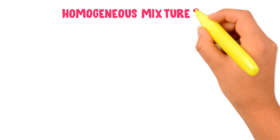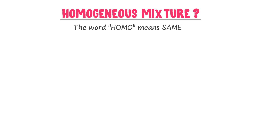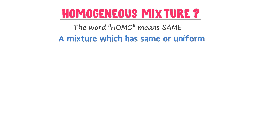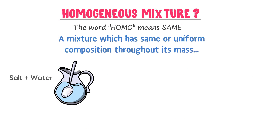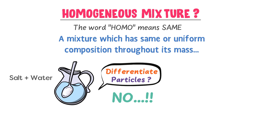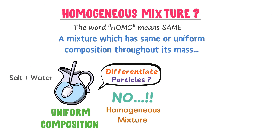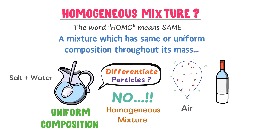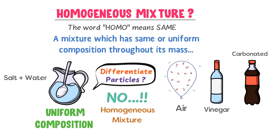What is a homogeneous mixture? The word 'homo' means same. A homogeneous mixture is a mixture which has the same or uniform composition throughout its mass. For example, when you dissolve salt in the water, can you differentiate the particles of salt from the particles of water? The answer is no — we cannot differentiate them. So we say that salt and water form a uniform composition throughout its mass and we therefore call it a homogeneous mixture. Some other examples of homogeneous mixtures are air, vinegar, and carbonated drinks. These all have uniform composition throughout their mass.